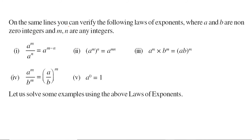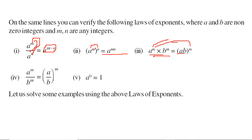After this law, there are certain more things to remember. a to the power m divided by a to the power n — for division, if the bases are same, the powers will be subtracted: m minus n. If a to the power m is raised to the power n, then m and n will be multiplied: a to the power m into n. Also, a to the power m into b to the power m equals ab to the power m. a to the power m divided by b to the power m is a by b to the power m. And anything to the power 0 is always 1.